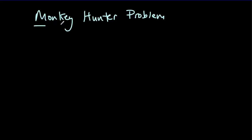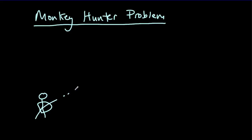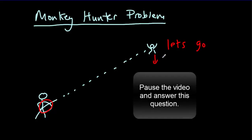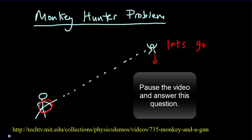Now if you really understood that last explanation, you're going to make an excellent prediction in the monkey hunter problem. In the problem, you've got a hunter with a bow and arrow who aims directly at a monkey hanging in a tree. At the instant the hunter releases the arrow, the monkey lets go and begins to drop. The question becomes: is that going to help the monkey? Will the arrow still hit him, or will he drop below the arrow? Pause the video and make a prediction, then I'll show you the MIT physics department demonstration of what actually happens.